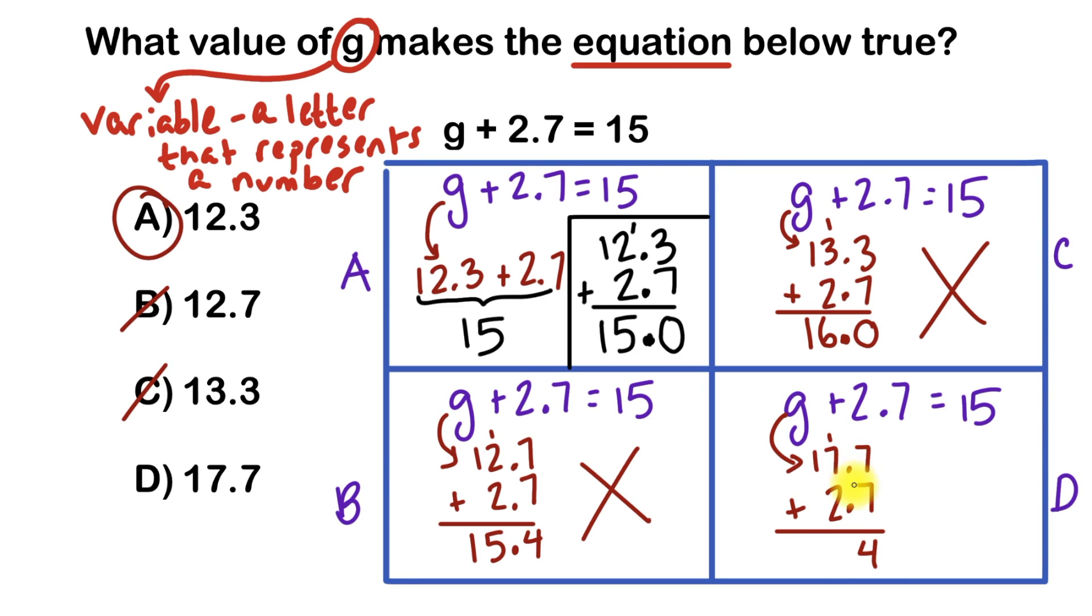I've got my decimal point here and here, which means the 1 in my answer will go right here. 7 plus 2 is 9, plus this 1 I carry is 10. I'll bring down a 0 and carry the 1. Now I've got 1 plus 1 and that's 2.